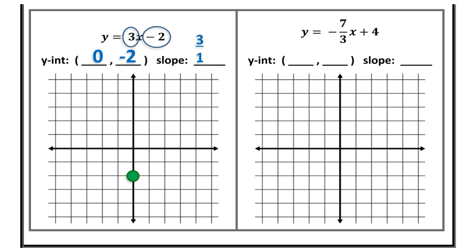I'm going to use my slope as directions. I rise 3 in the positive direction — so up — 1, 2, 3. Then I run 1. 1 is also positive; right is positive, left is negative. So I go 1 to the right. I rose 3 upward, I ran 1 to the right. I plot my second ordered pair, and then I connect the dots.